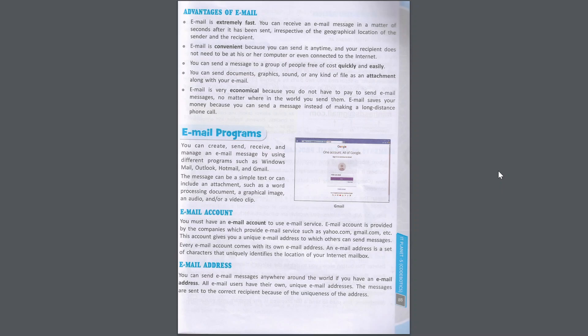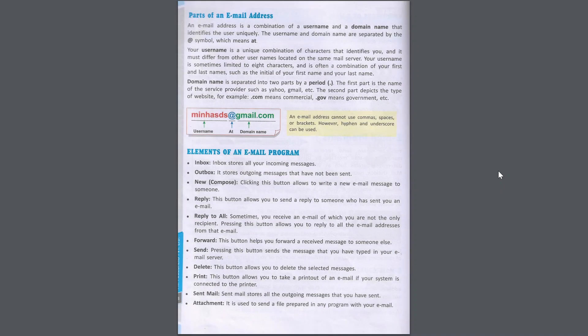Email Address. You can send email messages anywhere around the world if you have an email address. All email users have their own unique email addresses. The messages are sent to the correct recipient because of the uniqueness of the address. Parts of an Email Address: an email address is a combination of a username and a domain name that identifies the user uniquely. The username and domain name are separated by the at symbol (@). Your username is a unique combination of characters that identifies you, and it must differ from other usernames located on the same mail server.